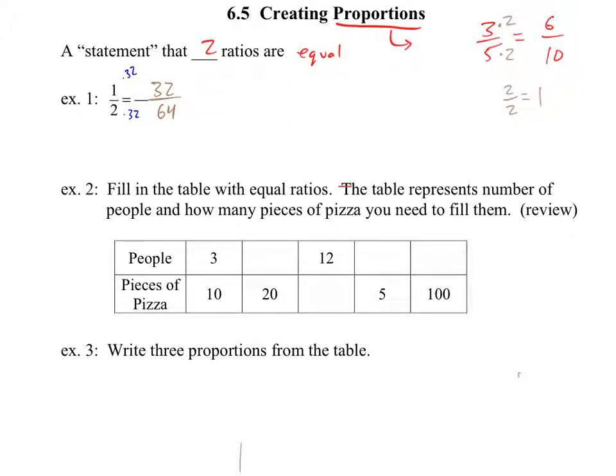Review of section 4. We have this fancy data table type of thing here. We want to fill it up with equal ratios. So if 3 people eat 10 pieces of pizza, how many people can you feed with 20? 6. And I'm guessing that you looked at it and said, okay, I could multiply this by 2. So then I multiply that by 2.